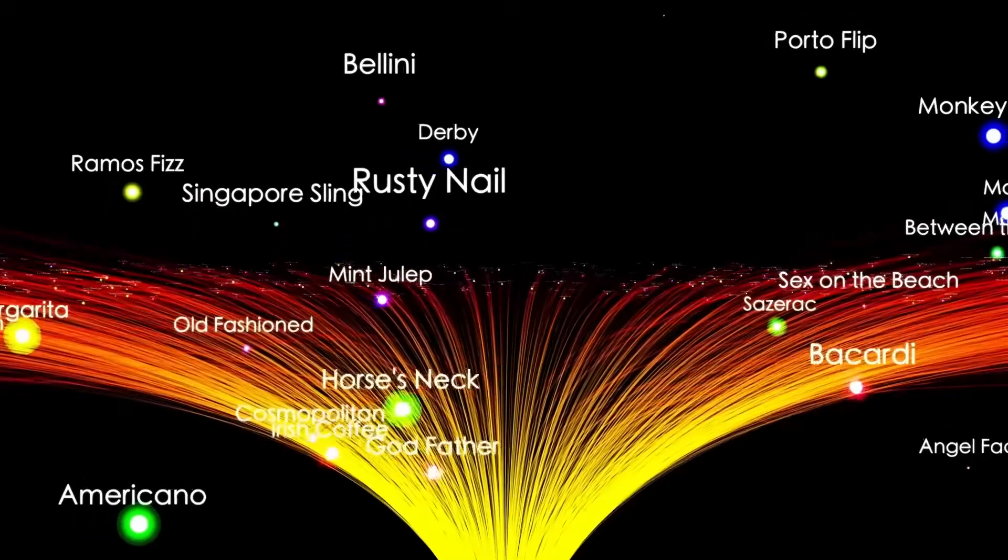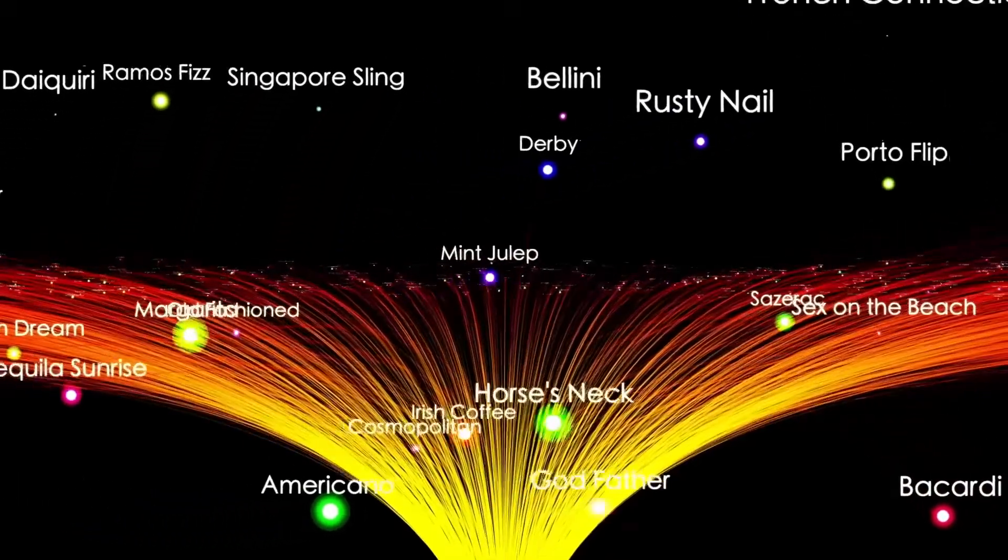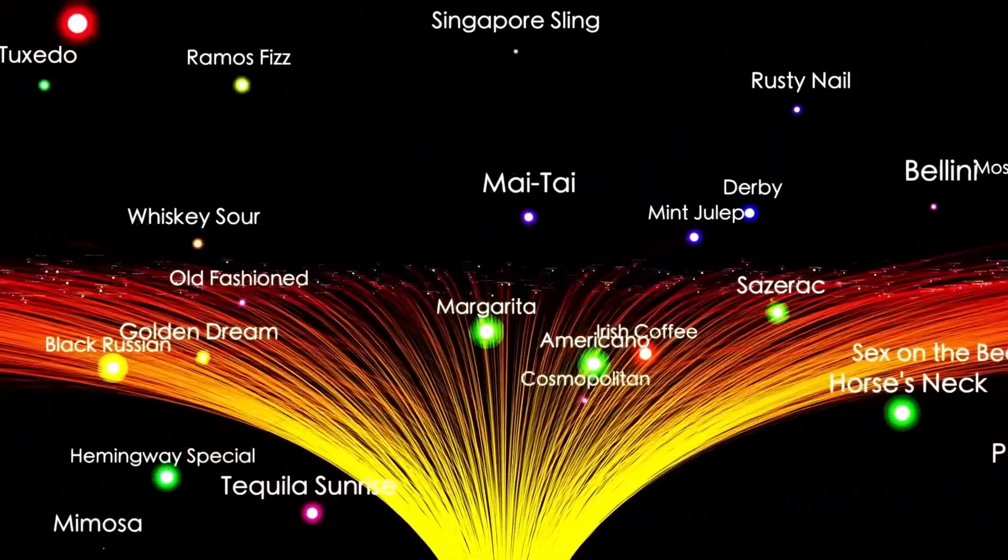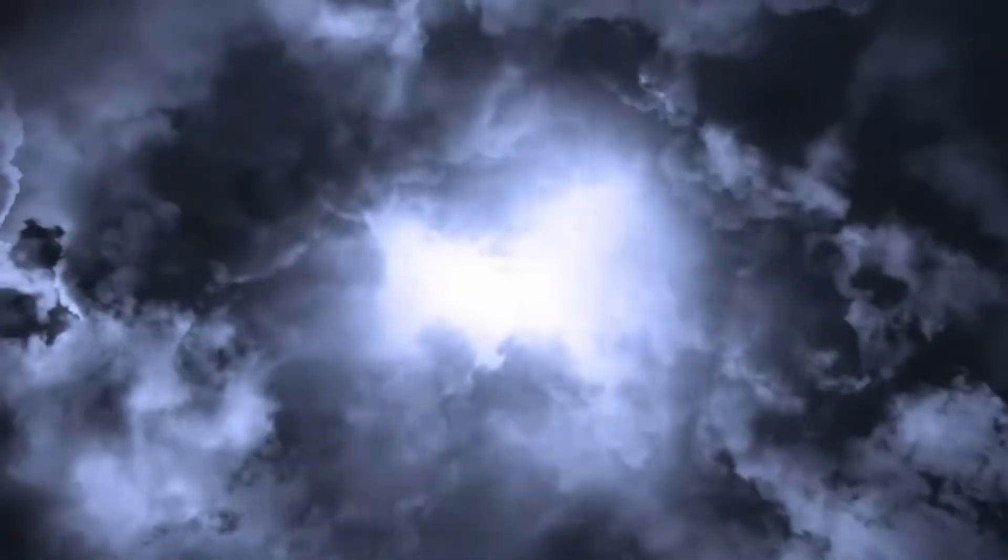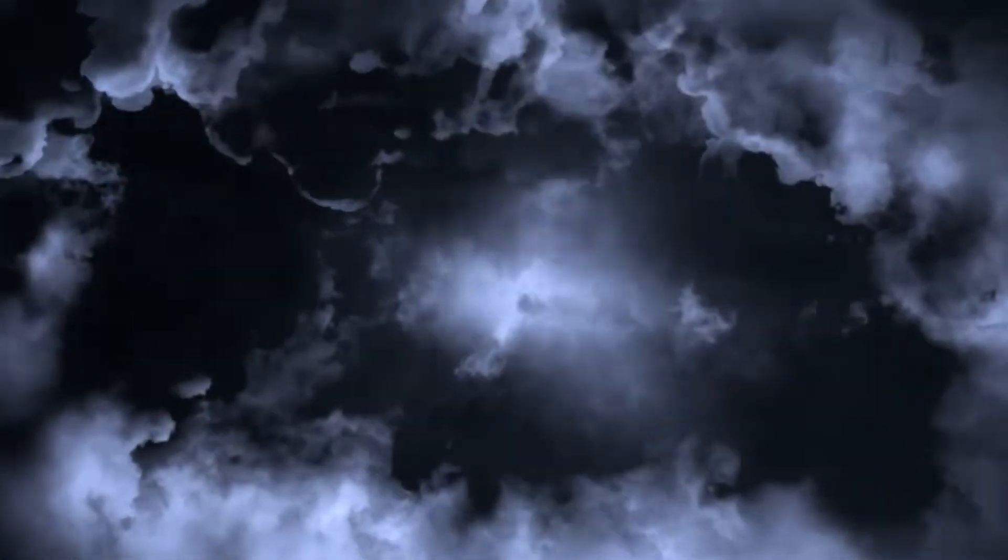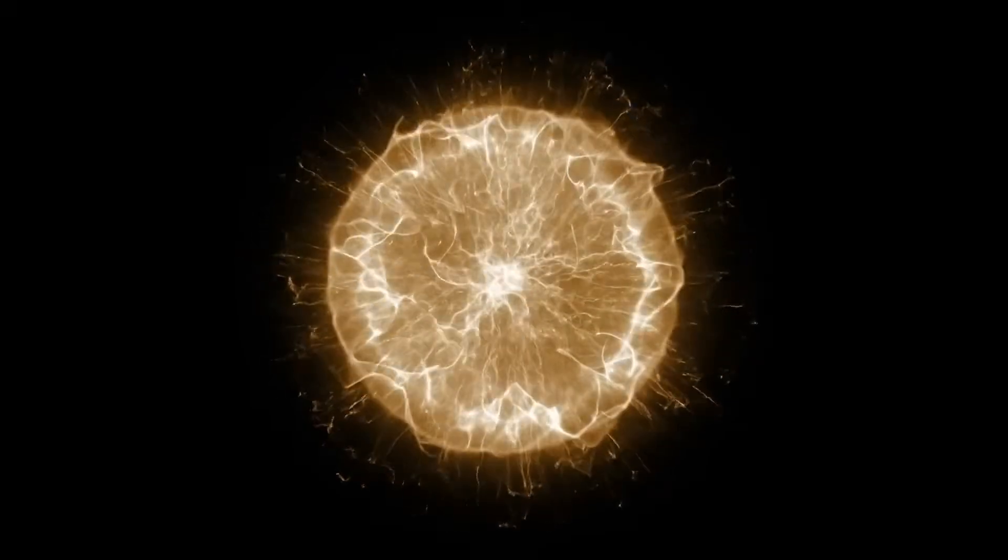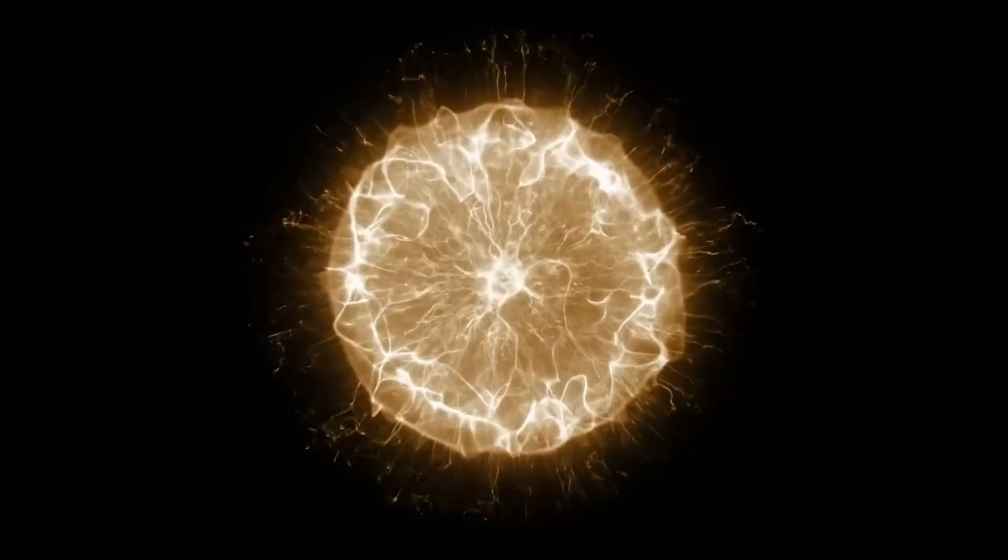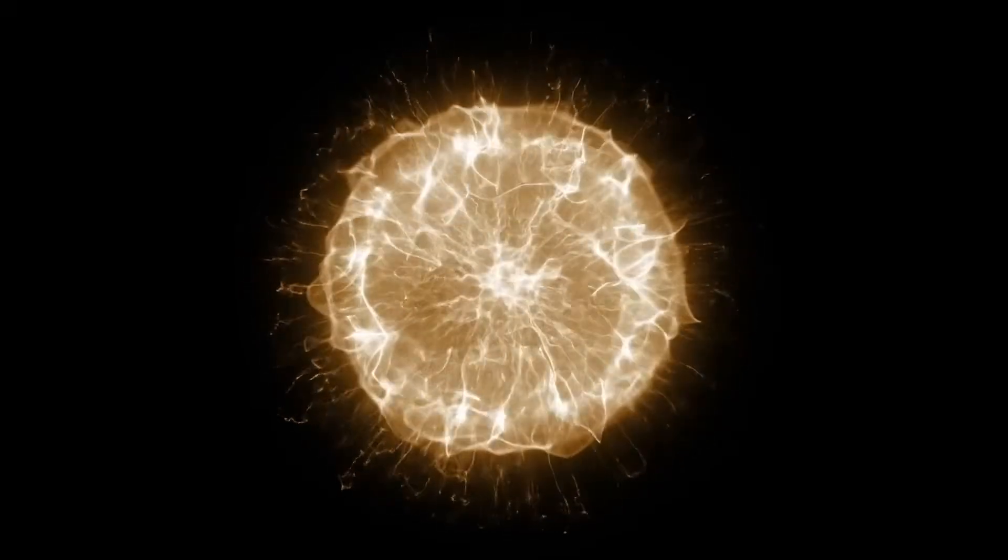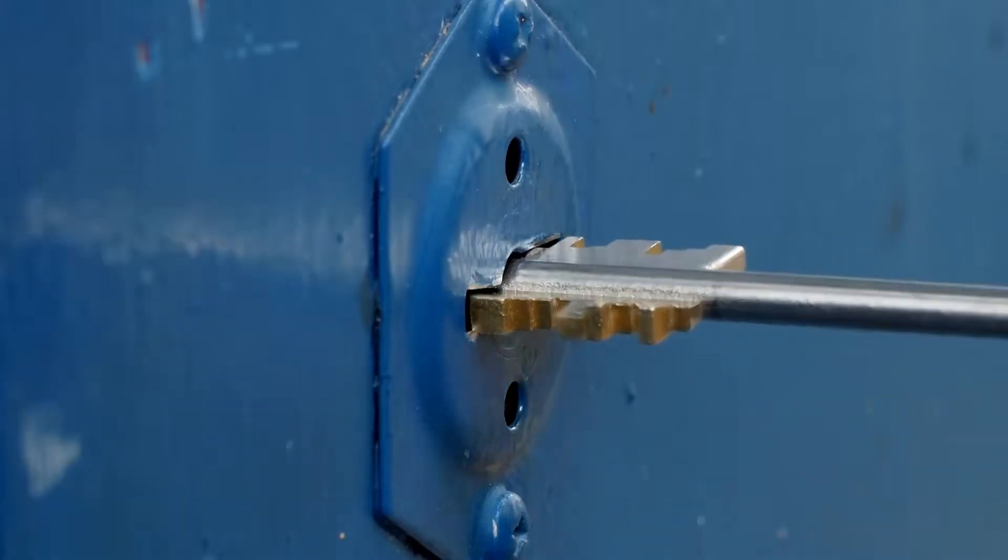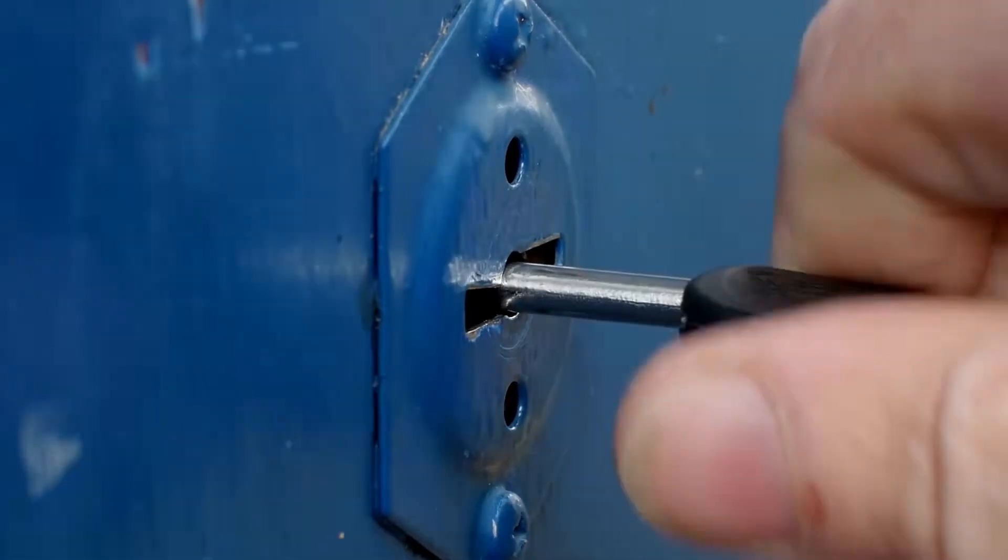This object was not from our solar system. It was moving at over 58 kilometers per second, enough speed to escape the sun's gravity forever. Scientists named it 3I Atlas, the third known object to fly in from another star system. Before this, we had Oumuamua in 2017 and Borisov in 2019, but this new arrival would break even more rules.